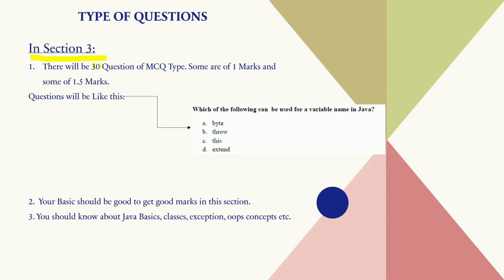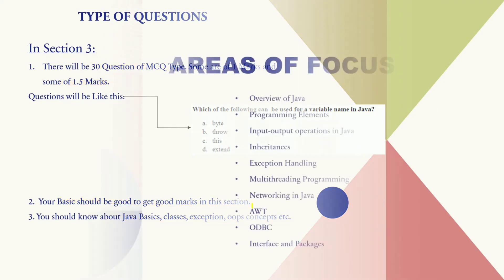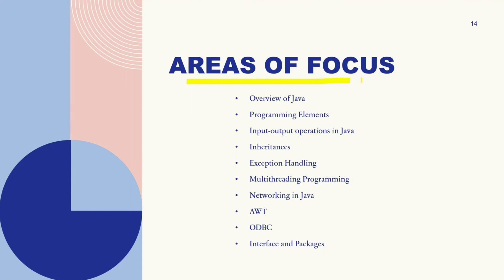Section 3 is the largest section of the NPTEL programming in Java exam, consisting of 30 questions worth 50 marks in total. This section includes questions on Java programming concepts and their implementation, covering data structures, algorithms, OOP concepts, and exception handling. Some questions may require you to write code snippets, while others may ask you to choose the correct option from multiple choices. Section 3 carries the highest weightage in the final score, so it's crucial to prepare well.